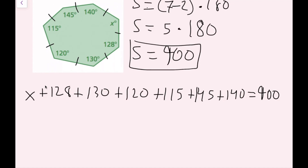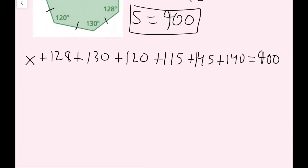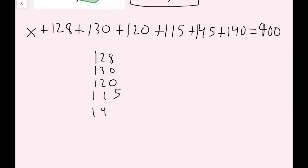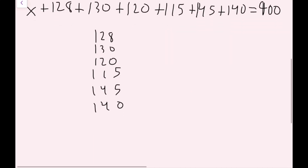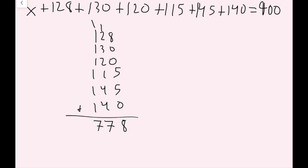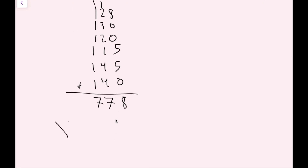Adding all the constants vertically: 128, 130, 120, 115, 145, and 140. All those like terms combine to 778. So the equation becomes x plus 778 equals 900.